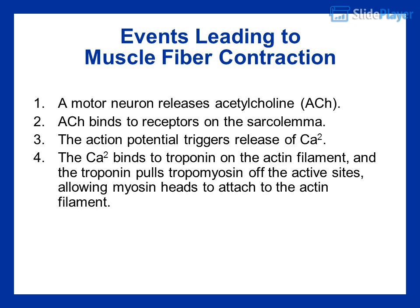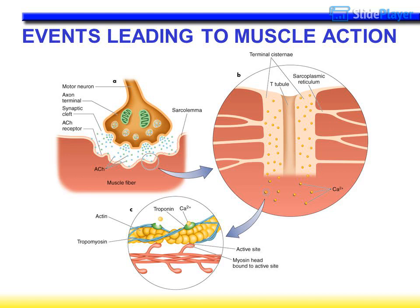Events leading to muscle fiber contraction: a motor neuron releases acetylcholine, which binds to receptors on the sarcolemma. The action potential triggers release of calcium ions. The calcium ions bind to troponin on the actin filament, and the troponin pulls tropomyosin off the active sites, allowing myosin heads to attach to the actin filament.